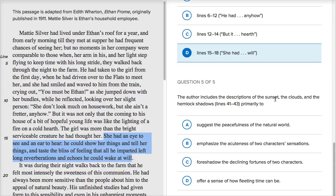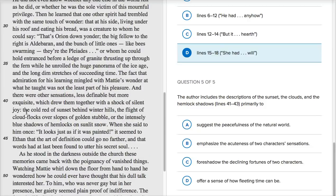The author includes the descriptions of the sunset, the clouds, and the hemlock shadows. Hemlock is a type of plant. So, the shadows of the plants were nature. So, lines 41, 43. So, let's go down to line 41, 43. And I'll start reading a little early. And there were other sensations. Less definable, but more exquisite. So, before he's talking about kind of science of the stars and being able to think about what's in the fossil record and all of that. But then they're saying, and there were other sensations. Less definable, but more exquisite. Which drew them together with a shock of silent joy. The cold red of sunset behind the winter hills. The flight of cloud flocks over slopes of golden stubble. Or the intensely blue shadows of hemlock on sunlit snow. When she said to him once, it looked just as if it was painted. So, this is just kind of that incredible.